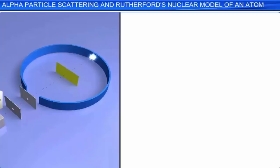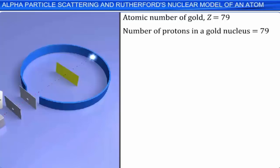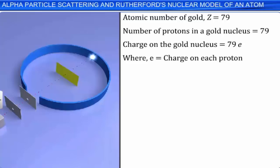The atomic number of gold is 79, meaning the nucleus of gold contains 79 protons. Therefore, the charge on the gold nucleus is equal to 79e, where e is the charge on each proton. Hence, the gold nucleus is approximately 50 times heavier than the alpha particle, and it can be assumed that the gold nucleus remains stationary during the scattering process.